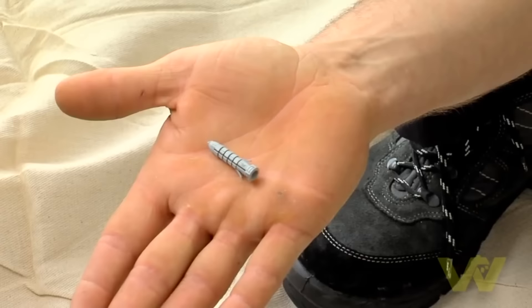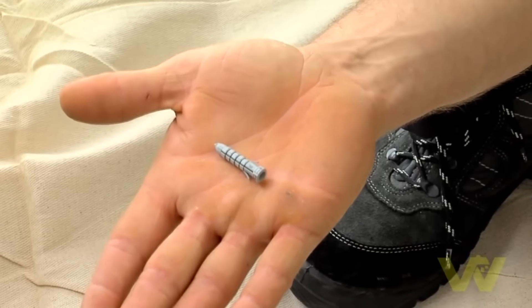Now plasterboard is quite soft and there's a lot of plasterboard fixings. Here's a few plasterboard fixings and how they work. This is a nylon drywall fixing. It's suitable for lightweight around the house fixings.